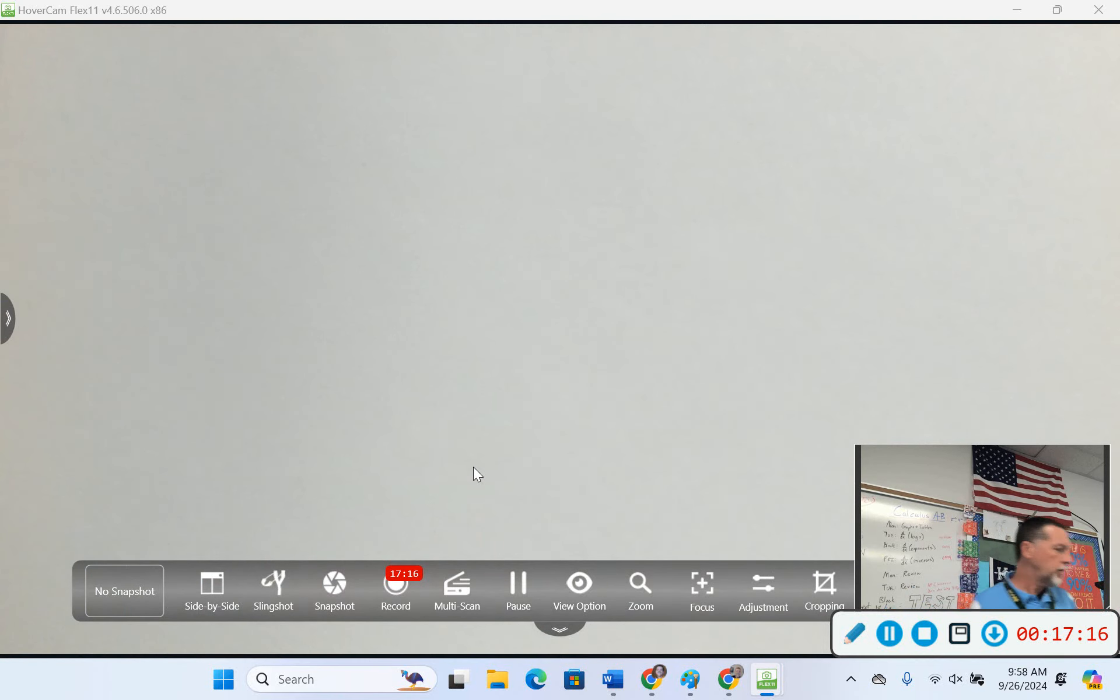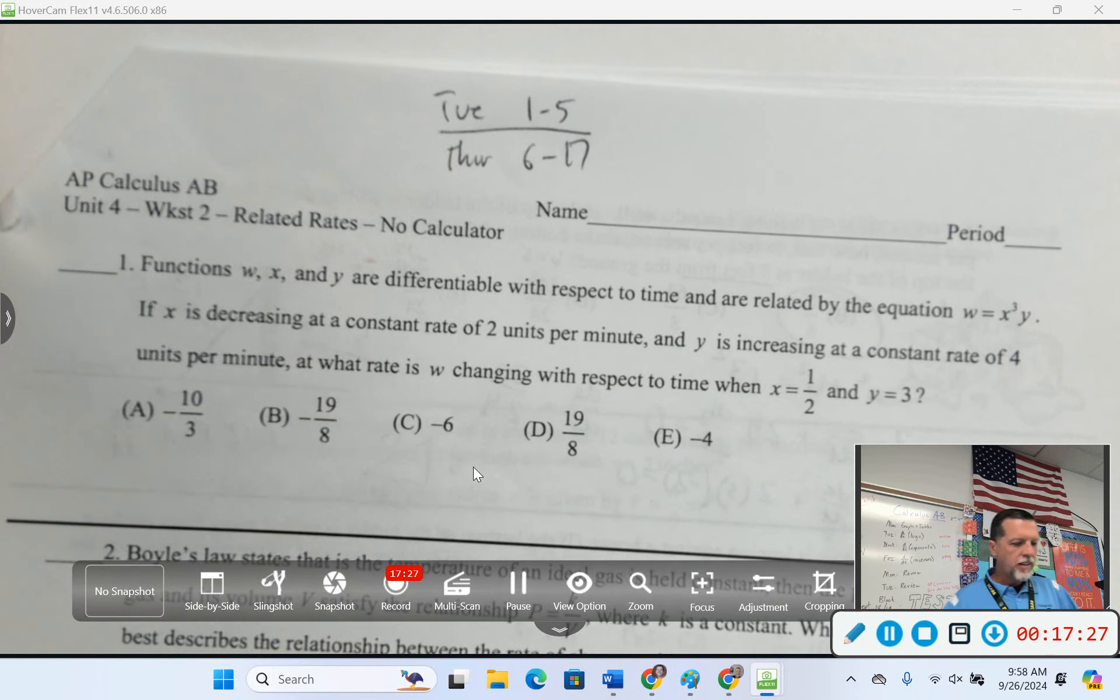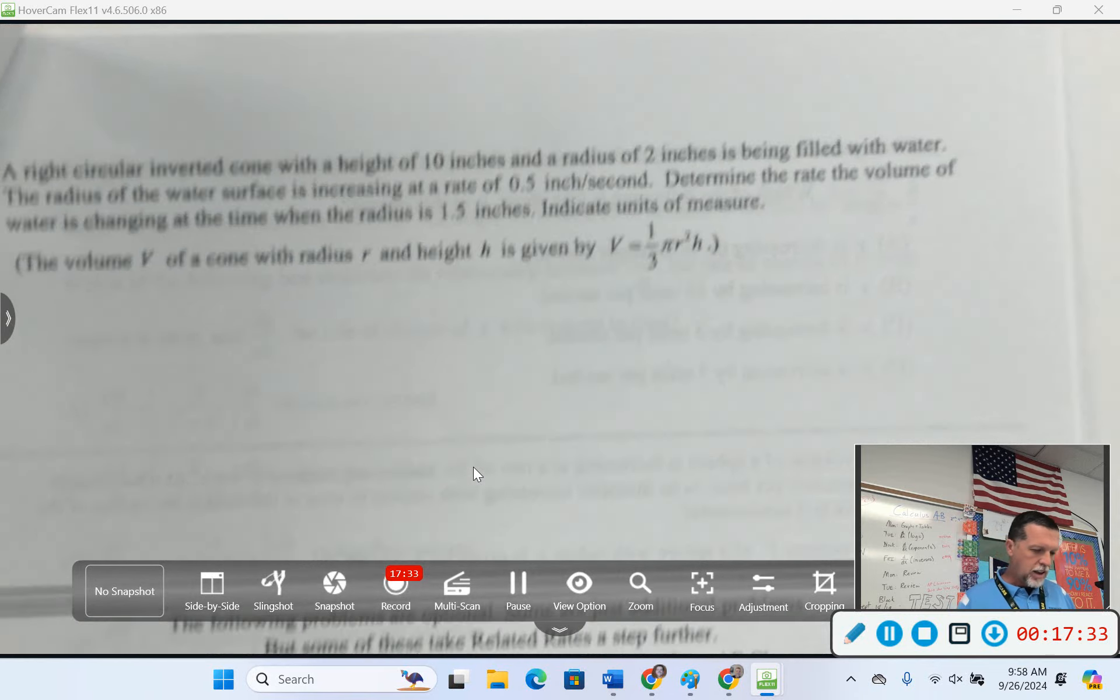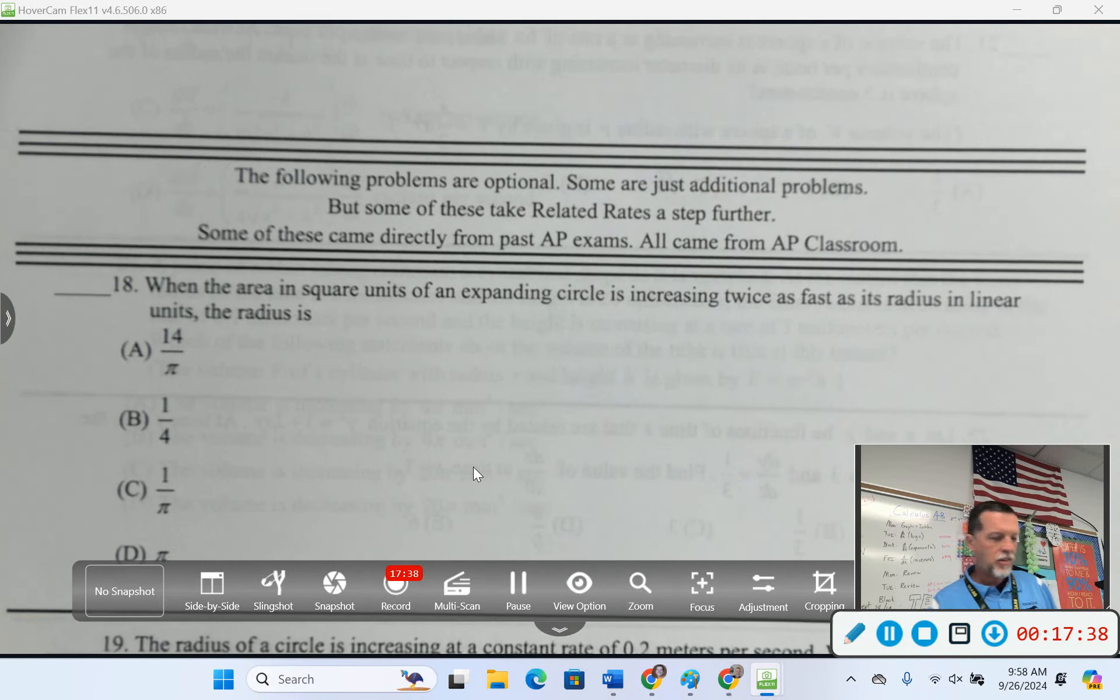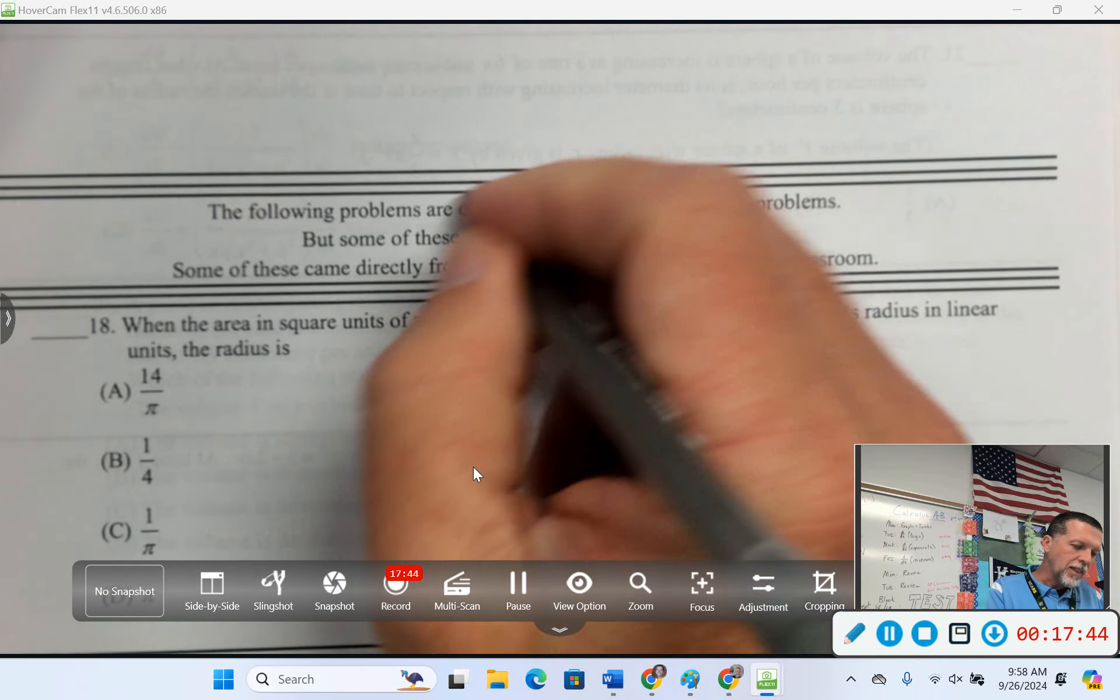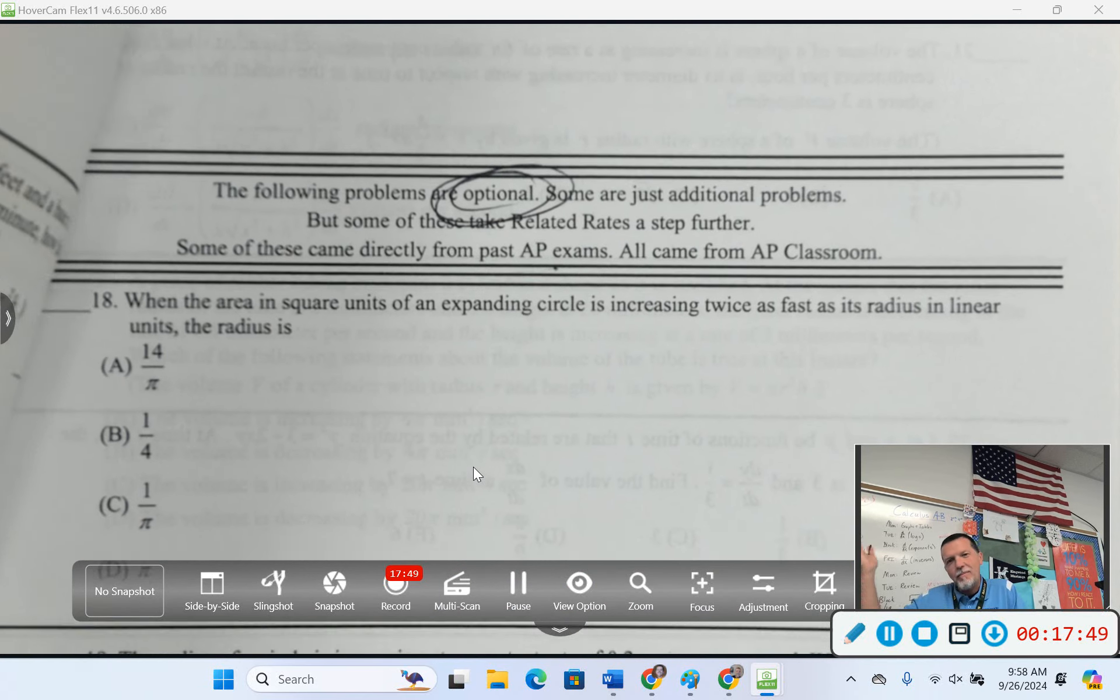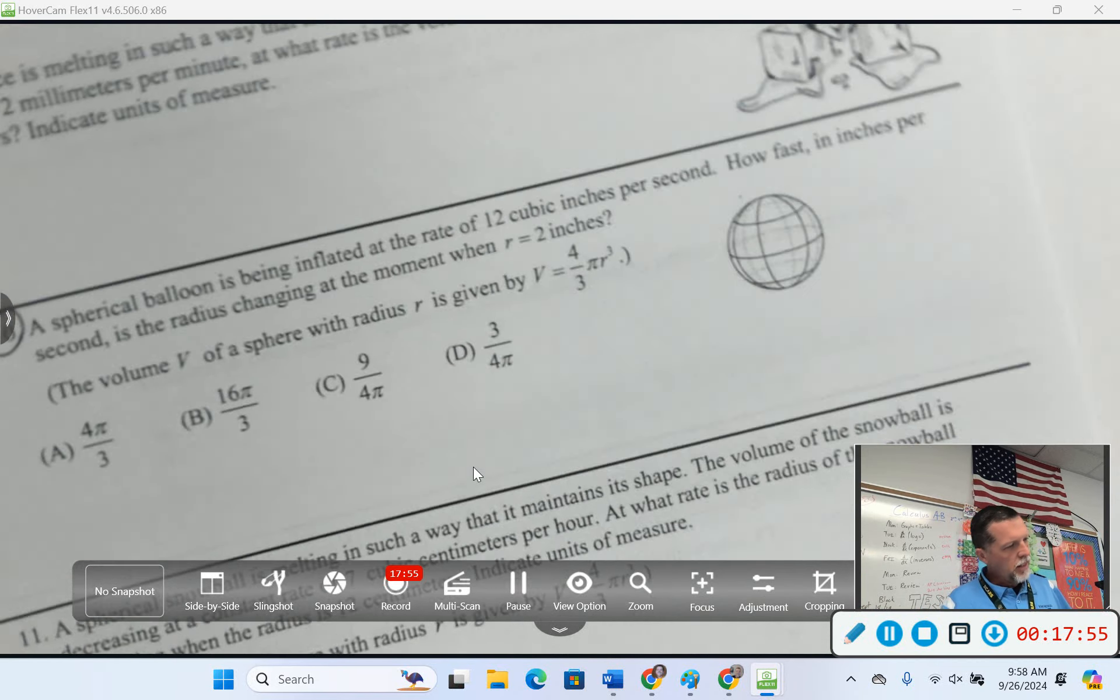So, let's look at the worksheet packet again. Tuesday the official assignment was 1 through 5. Today the official assignment is 6 through 17. I will say, if you've looked ahead, when you get to number 18, it says these problems are optional. Some are just additional problems. Some of these take related rates a step further. Some came directly from past AP exams. But the big thing is, they're optional. If you do 1 through 17 and you're feeling good, then hey, you're good.